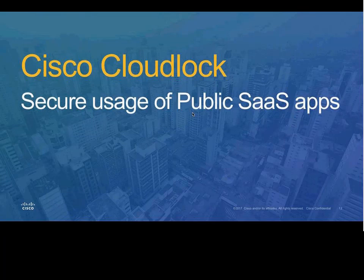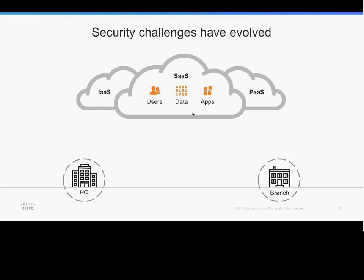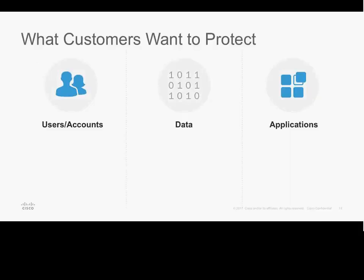Understanding these risks is important, but customers often ask what it actually means for them. This is a simplified topology of what most environments look like today: headquarters, branches, and roaming users all connecting directly to business-critical cloud applications. At Cisco, we call this the extended perimeter - the extended area that customers now need to protect, especially around GDPR and compliance. There are a number of use cases, but these are the three key areas customers are looking to protect.